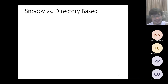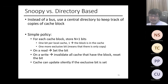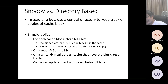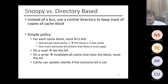Cache coherence is complex, but the snoopy bus approach doesn't scale — you can't have 8, 16, or 32 processors sharing a single bus. Another idea is to use a central directory to track copies in each cache block. For each cache block, you store N+1 bits: one bit per local cache indicating if it holds the block, plus one exclusive bit indicating there's only one owner. On a read you set the bit; on a write you invalidate the entire block and set yourself as the exclusive owner. The cache can update silently when the exclusive bit is set.